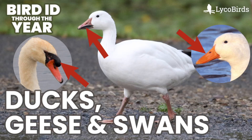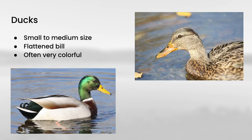Hey everyone, it's Bobby from LycoBirds with another video in my Bird ID Through the Year series, and this one is going to cover ducks, geese, and swans. In particular, I want to talk about the structural differences between them, and the ultimate goal is to make sure you're able to distinguish between the various wild and domestic types that you'll encounter. So let's just do a very quick review of some of the key features of these families.